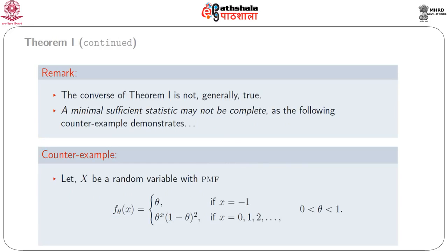It is interesting to note that the converse of Theorem 1 is not generally true. We present a counter example showing that a minimal sufficient statistic may not be complete. Let X be a random variable with PMF: f_θ(x) = θ if x = −1; = θ^x (1−θ)² if x = 0, 1, 2, …; where 0 < θ < 1.